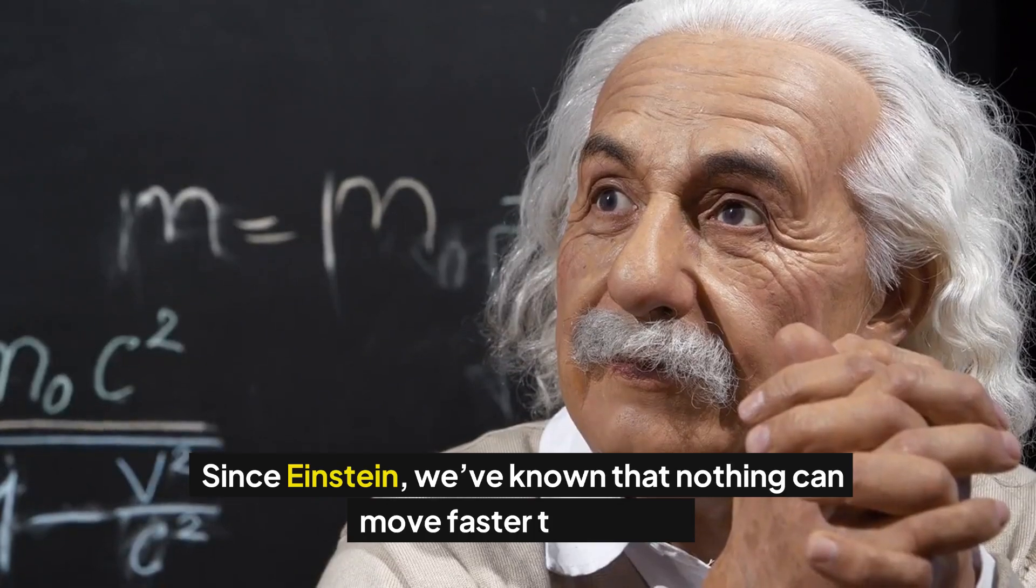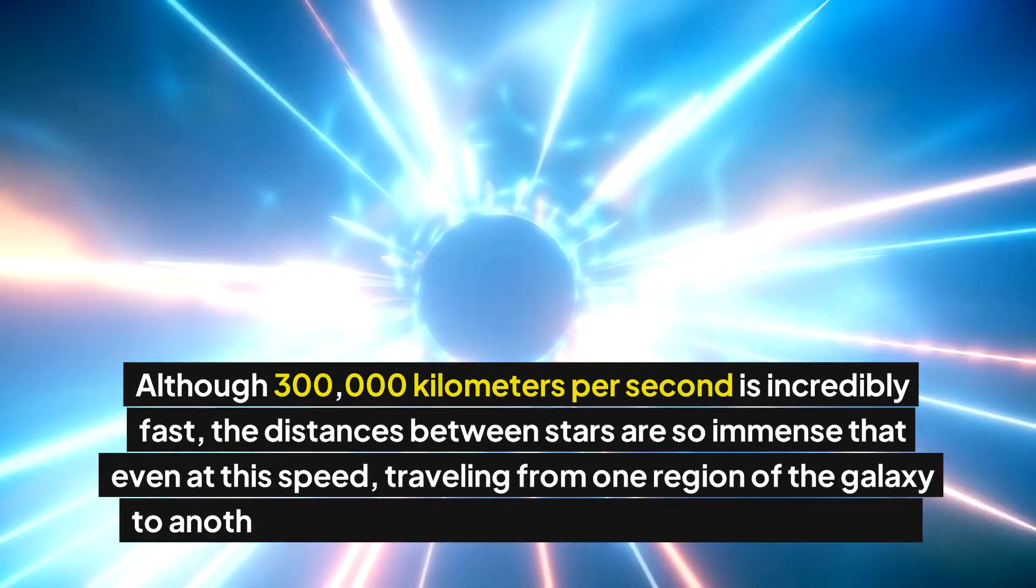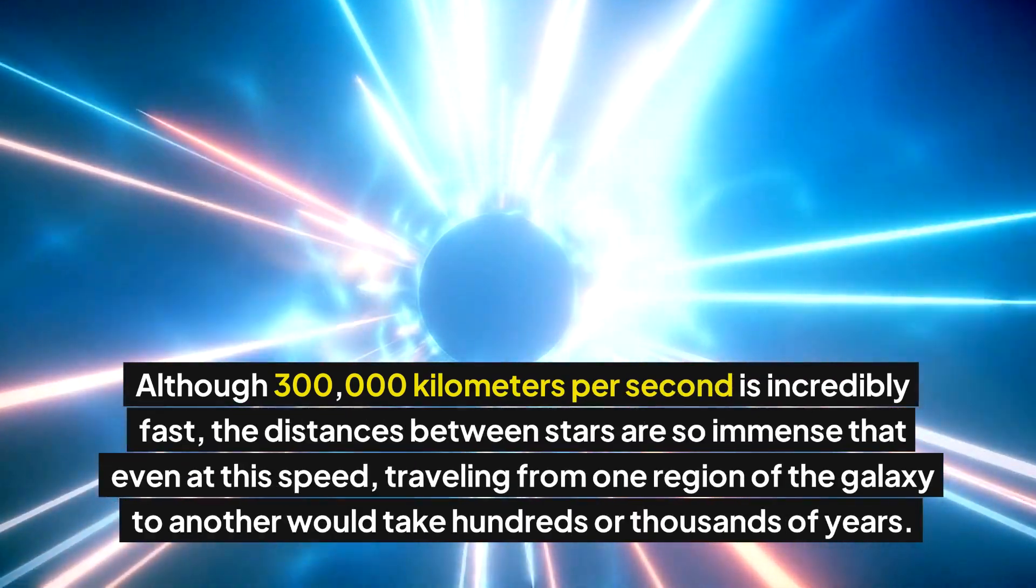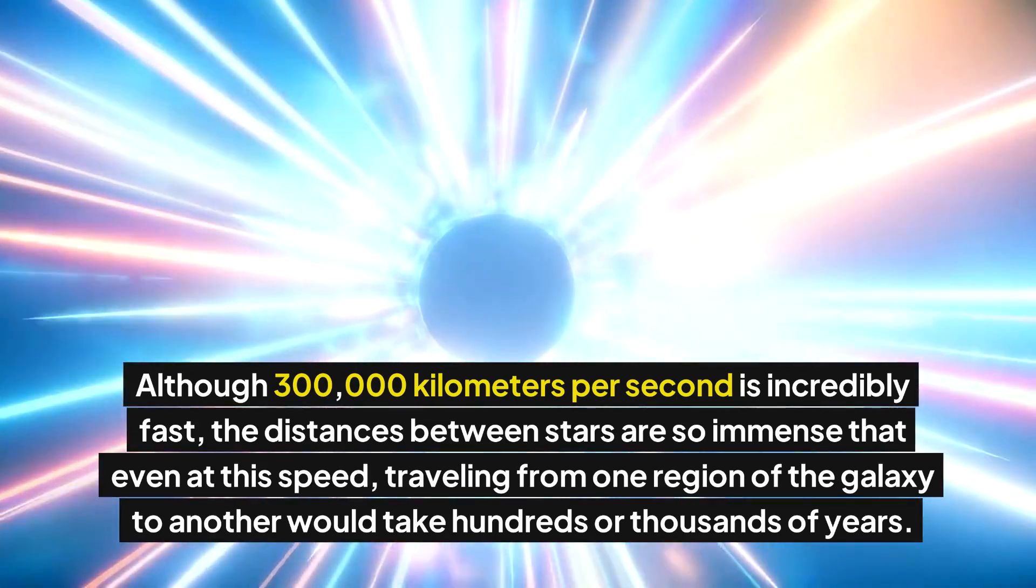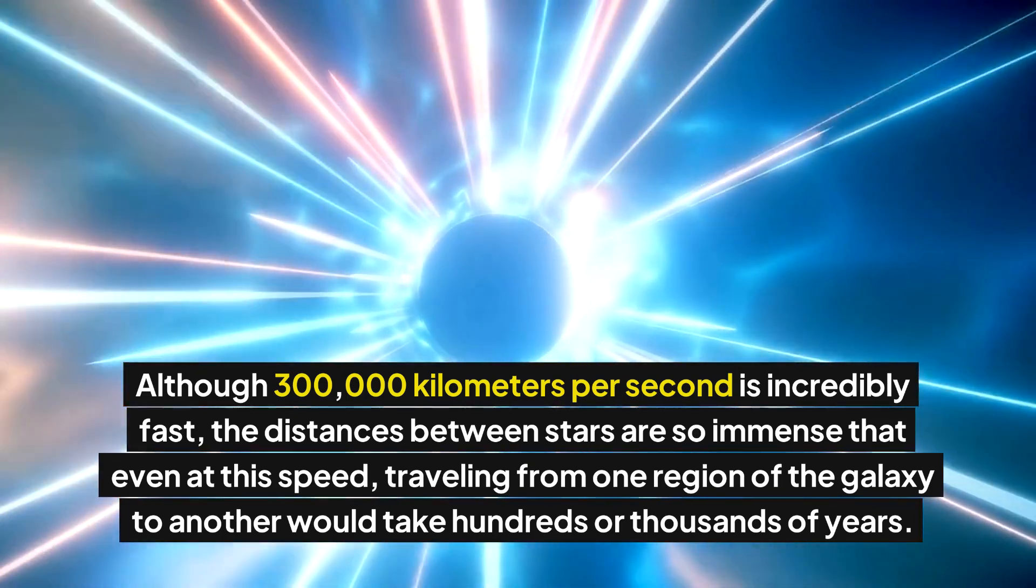Since Einstein, we've known that nothing can move faster than light. Although 300,000 kilometers per second is incredibly fast, the distances between stars are so immense that even at this speed, traveling from one region of the galaxy to another would take hundreds or thousands of years.